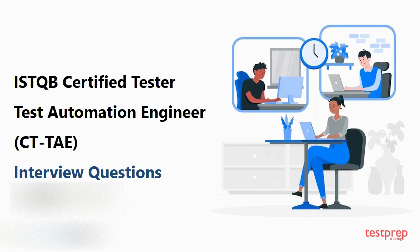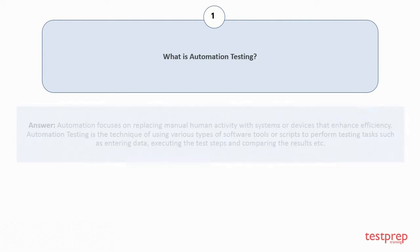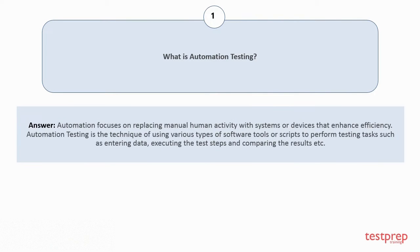Question number one: What is automation testing? Automation focuses on replacing manual human activity with systems or devices that enhance efficiency. Automation testing is the technique of using various types of software tools or scripts to perform testing tasks such as entering data, executing the test steps, and comparing the results.